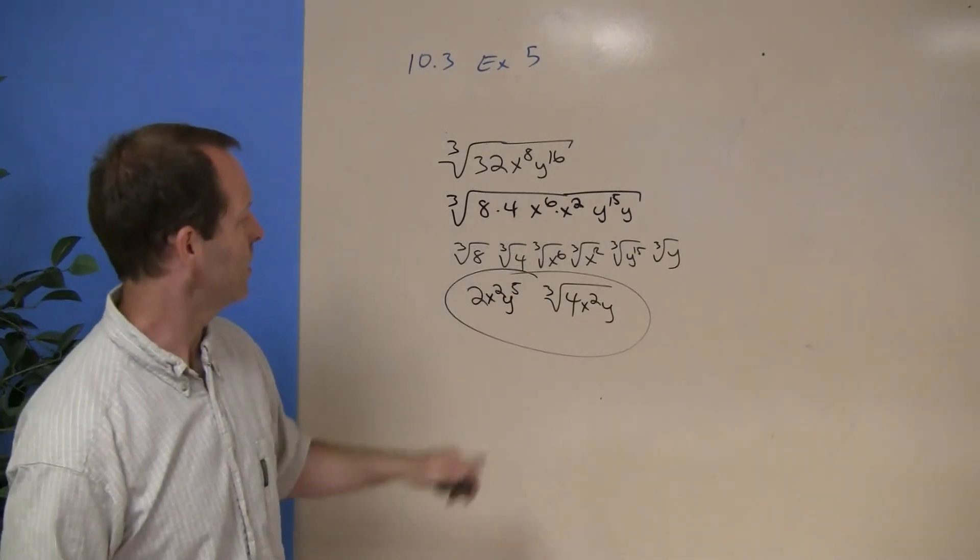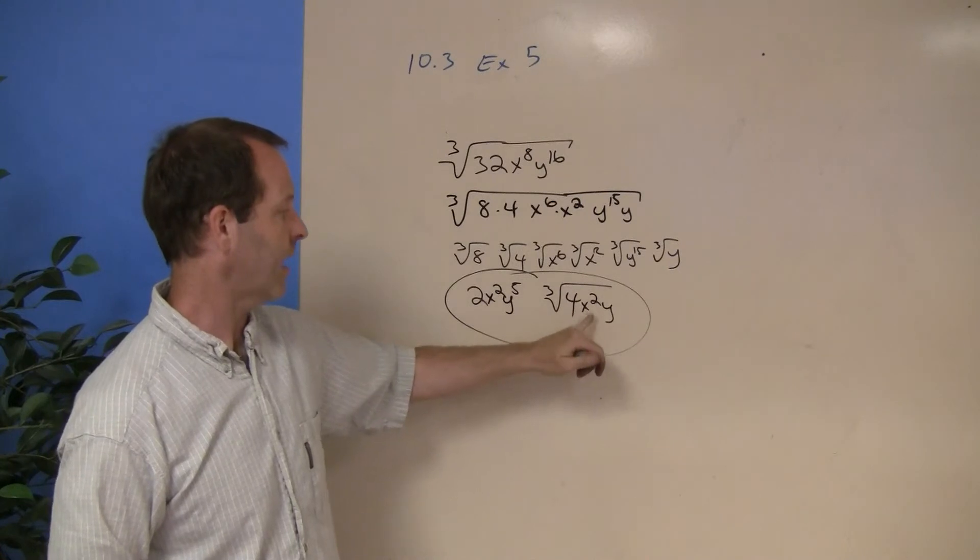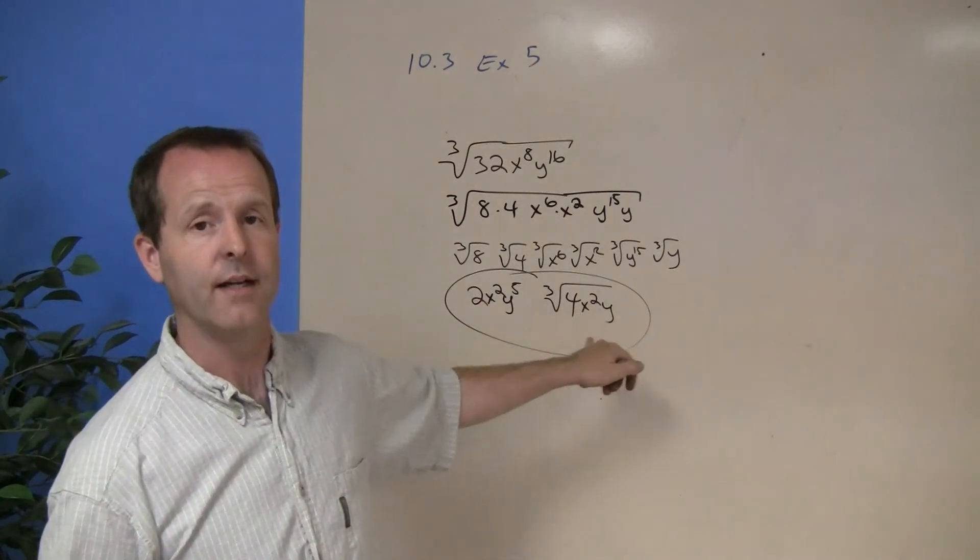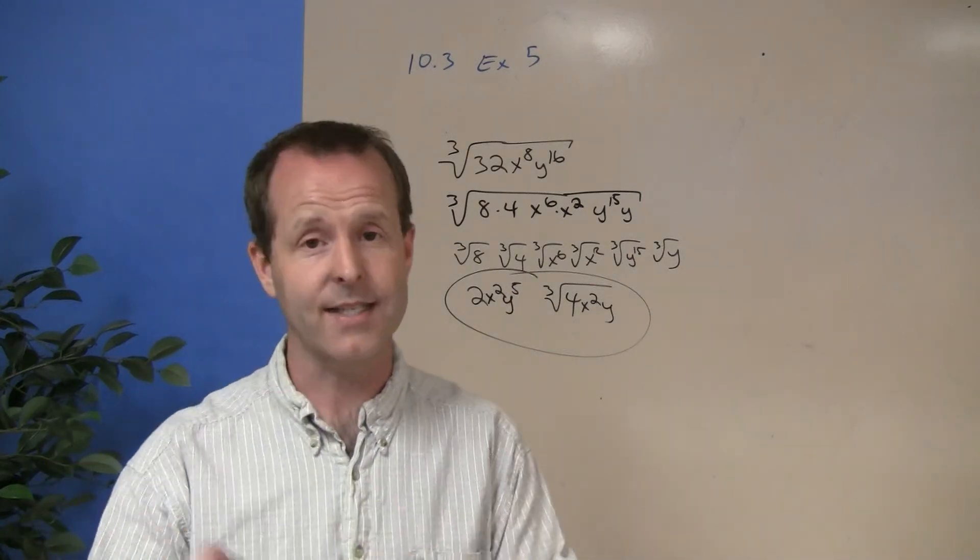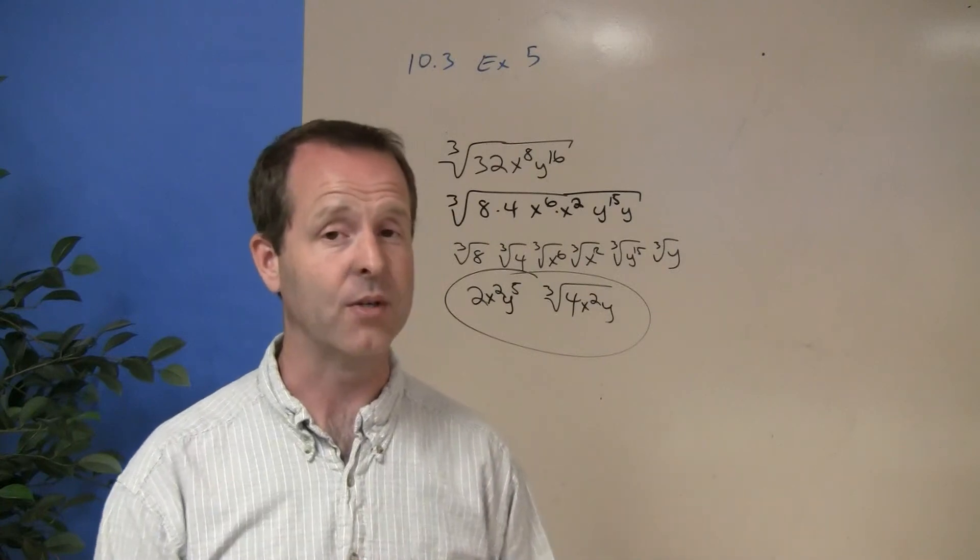And so there's my solution. 2x squared y to the 5th cube root 4x squared y. And don't let this x squared or this 4 fool you. If it was a square root world, we could take them out. But since it is cube root world, we can't do it.